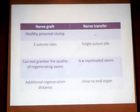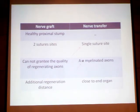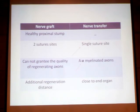In nerve transfer, there is a single suture line, which is an advantage. With nerve grafting, there are two suture lines — one at the proximal point and one at the distal point. The key principle of nerve transfer: I place the donor nerve close to the target muscle, making it a pure motor input directly to the muscle. This is the pure motor advantage.